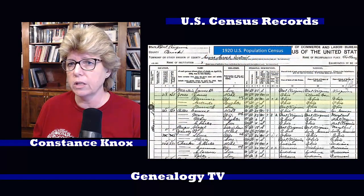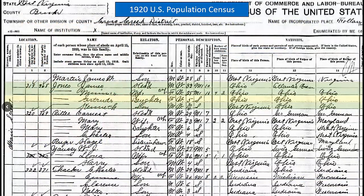If we take a look at this — I'm going to transition this over so you can see it a little bit better — in this case it's a 1920 U.S. population schedule. You can see that we have James Jones, his wife Minnie, and Gertrude and Kenneth, their daughter and their son. It gives us a column, and we're going to dig into all the different variations here shortly.